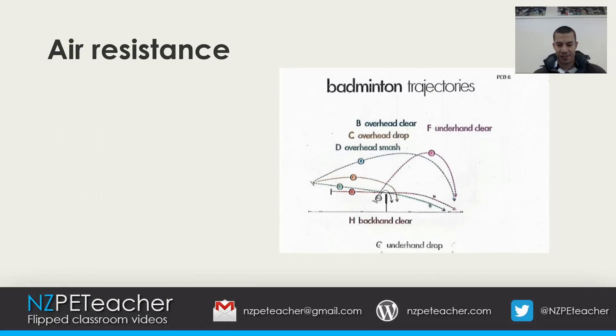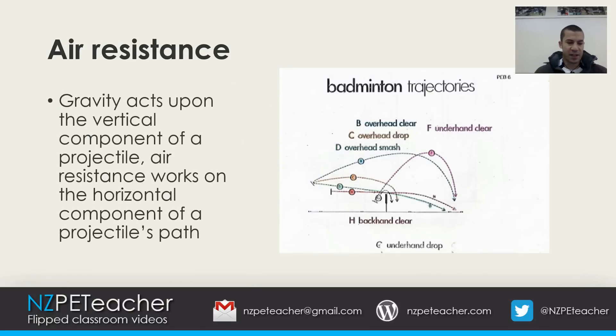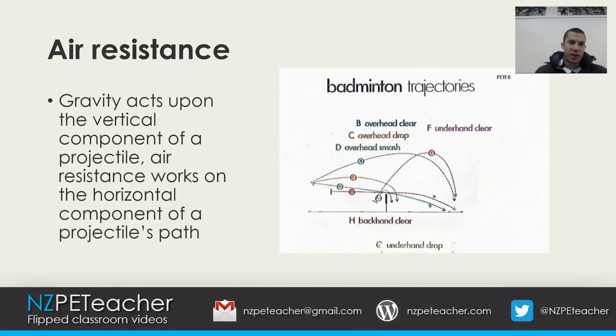Regarding air resistance: gravity acts upon the vertical component of a projectile, but air resistance works on the horizontal component of a projectile's path.